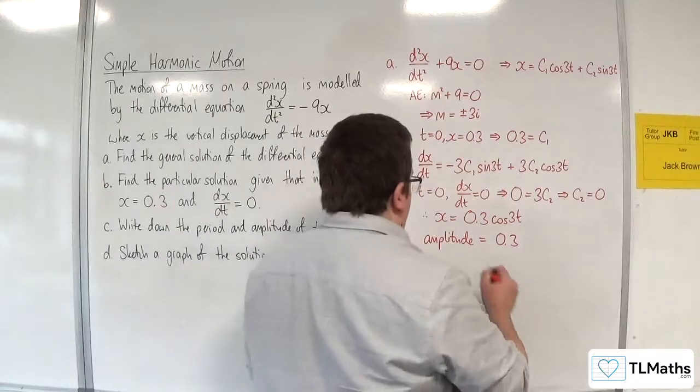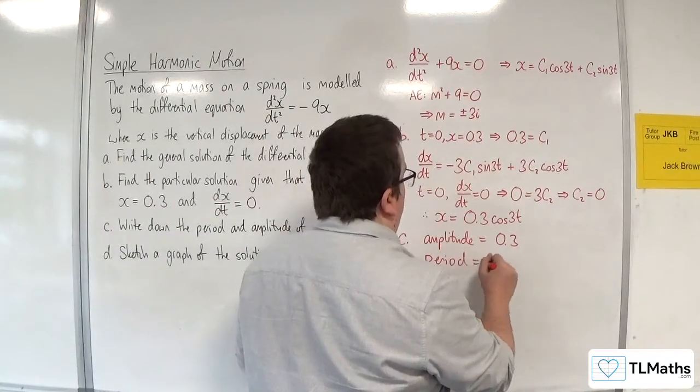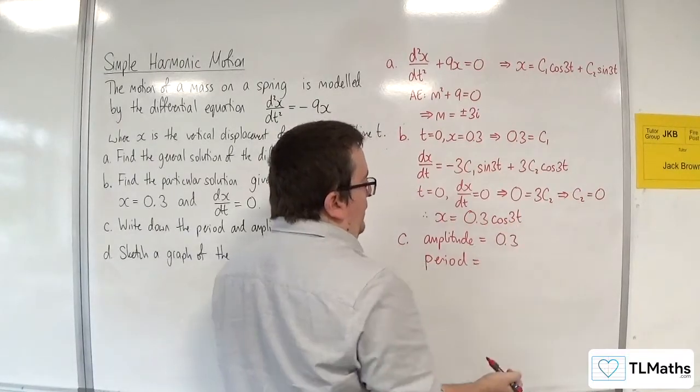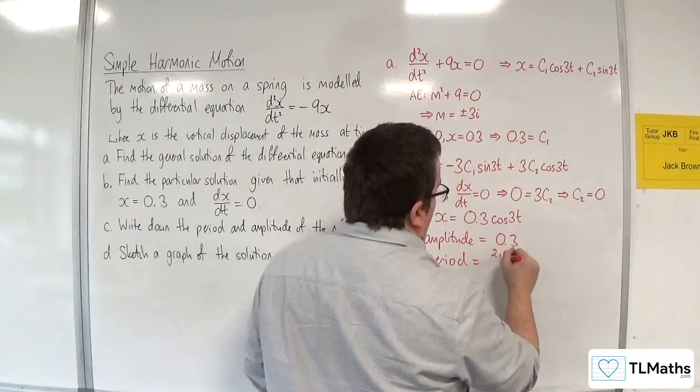The period, cosine usually has a period of 2pi, which has been stretched, in fact, to one third parallel to the t-axis, so that would be 2pi over 3.